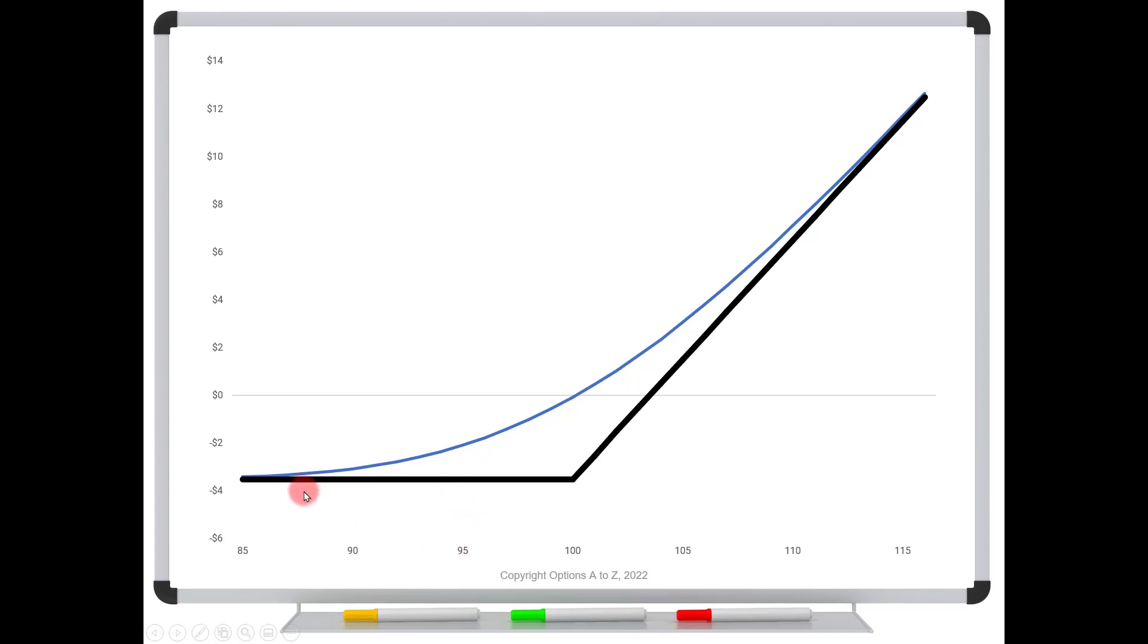Now here's where it gets really interesting. As time passes, this blue curve obviously changes because there's less time on the clock. So let's say that five days have passed, or in other words, 25 days remain on the option.